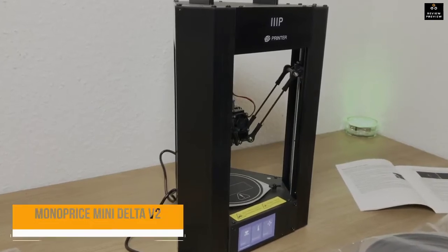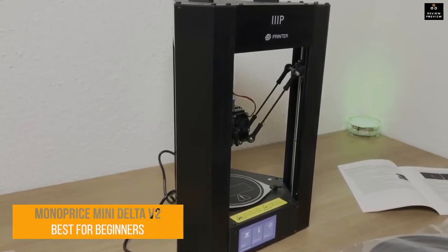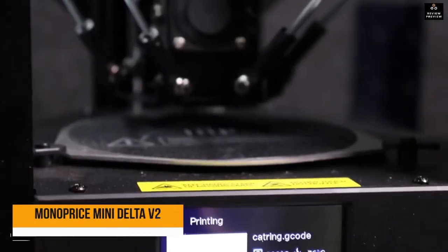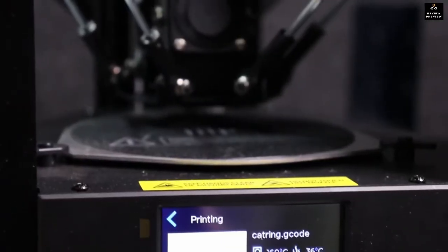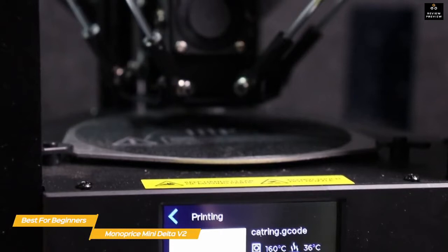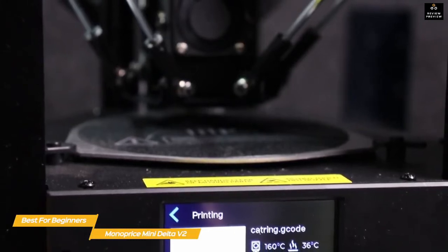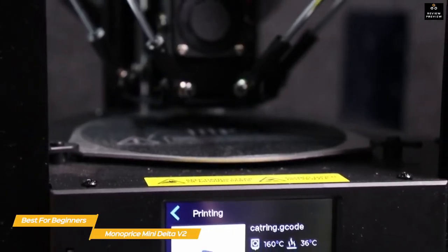First up, the Monoprice Mini Delta V2, our pick for best budget 3D printer for beginners. The Monoprice Mini Delta V2 is an excellent example of what an entry-level 3D printer should be. It's strong, versatile, and easy to use, but most importantly, it won't break the bank.